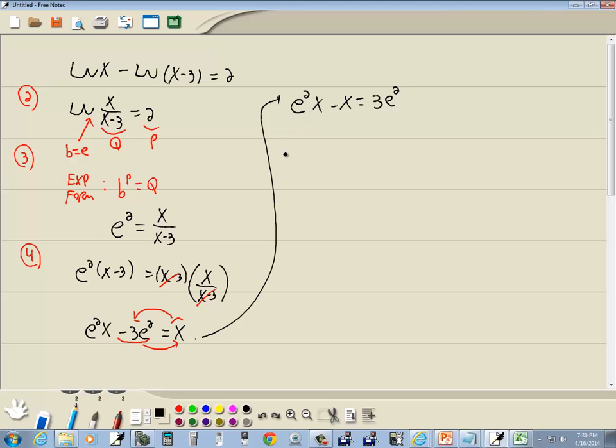Now we want to get a single x. The easiest way to get a single x in this problem is to factor out an x. We're going to factor out an x. That gives us x times e squared minus 1 equals 3 e squared.